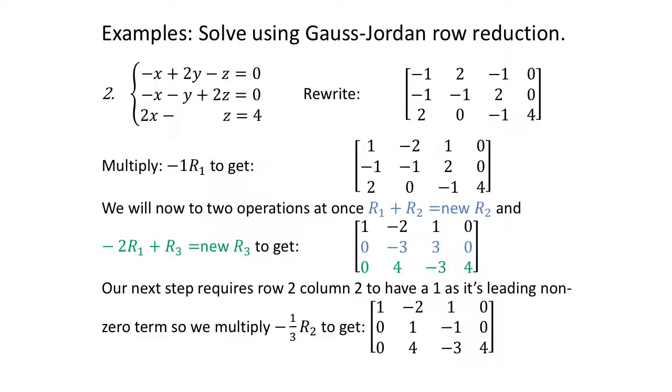After we have it written in matrix form, now we want to get a 1 in the upper left-hand corner, not a -1. We're positive people here. We want to make that a positive 1. So I'm going to multiply row 1 by -1. Changes the sign of everything in row 1. Nothing else changed. I didn't mess with row 2 or row 3 at all. So 1, -2, 1, 0. Fantastic. First goal done.